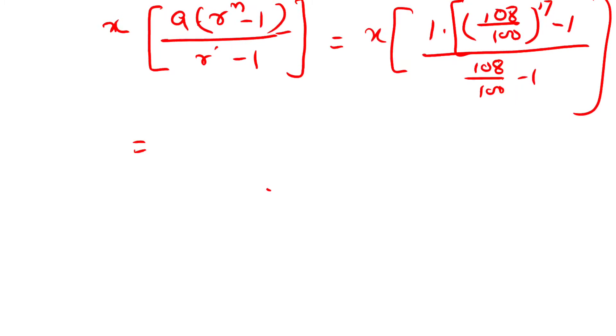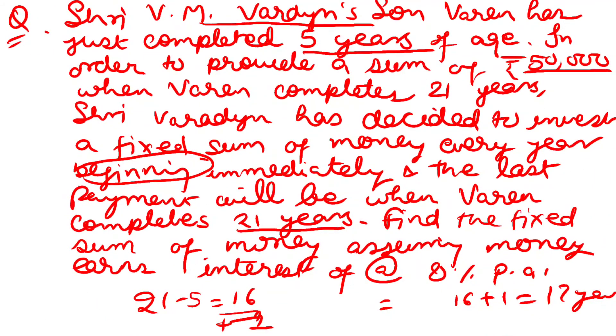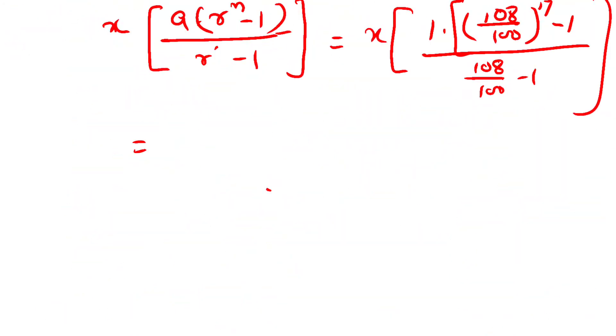This is given to equal 50,000. So we have to solve: x times [1.08 to the power 17 minus 1] upon [1.08 minus 1] equals 50,000.